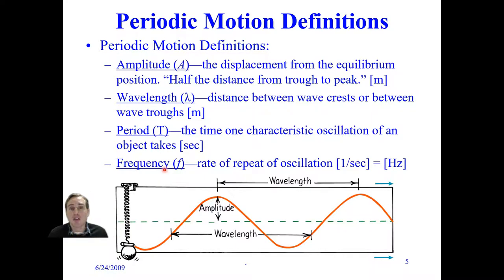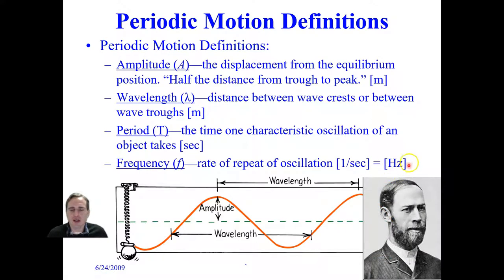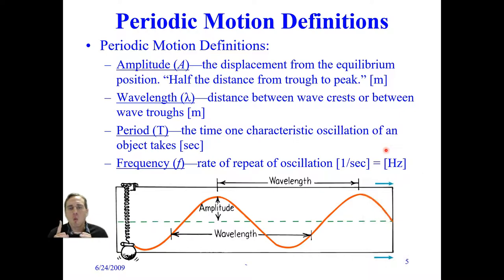Because frequency in cycles or oscillations per second is used so much, we give it a separate SI unit called Hertz, named after German physicist Heinrich Hertz, who first experimentally produced radio waves. One Hertz is exactly one oscillation per second — it tells you how often the oscillations of the object are occurring.